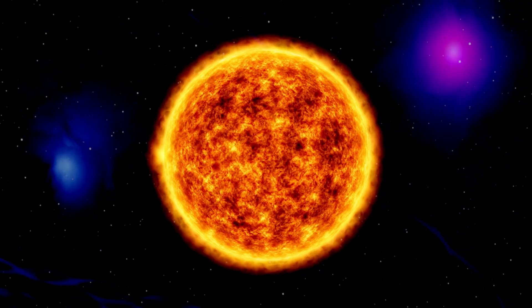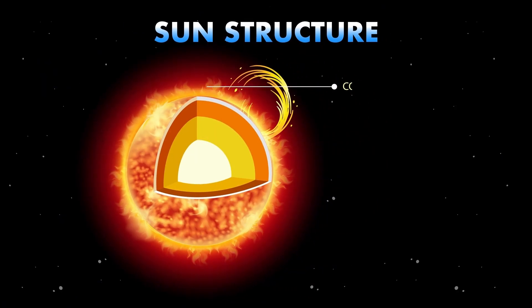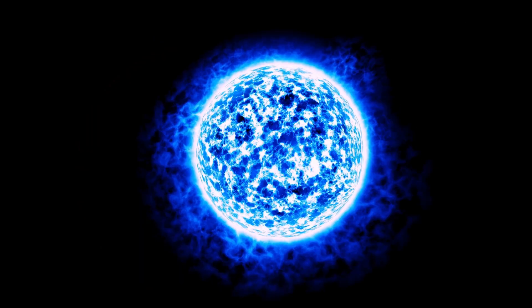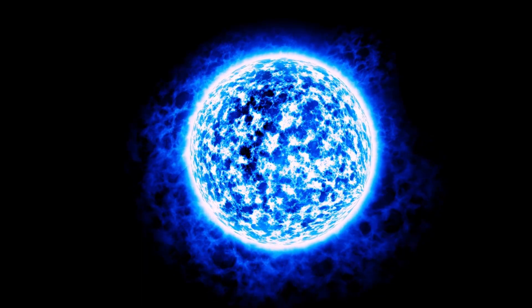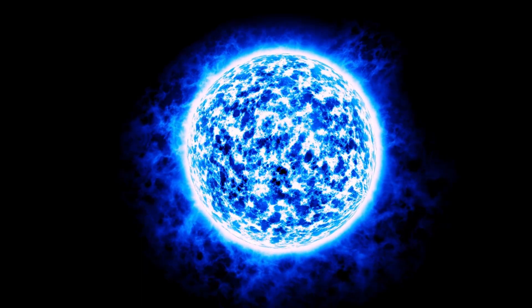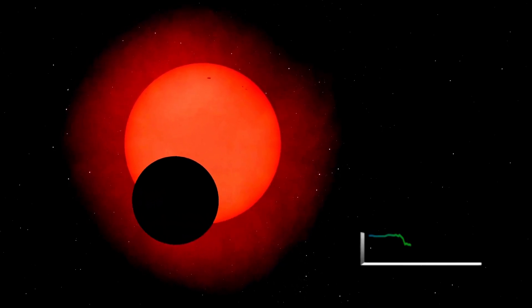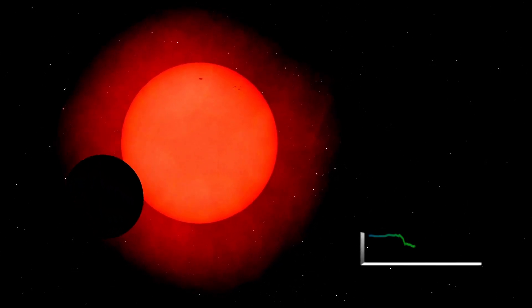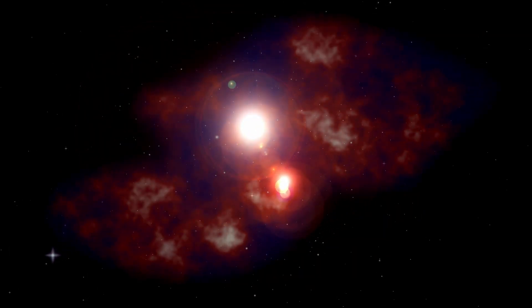When NASA recalculated Atlas's actual size based on physical surface mapping rather than brightness estimates, the numbers were stunning. Mass estimates increased by a factor of 24. Internal volume calculations suggested Atlas is large enough to contain structures the size of cities inside it. We weren't wrong because we're bad at math. We were wrong because something designed Atlas to deceive our measurements until it got close enough that the deception no longer mattered.